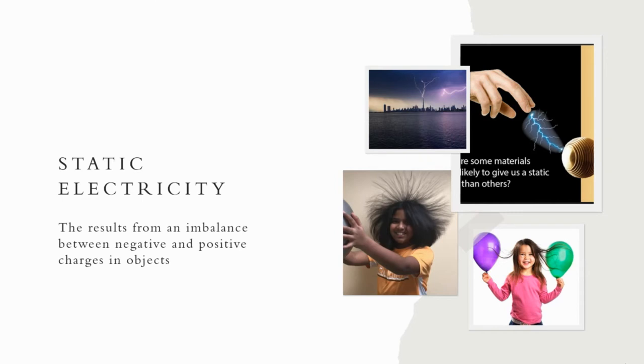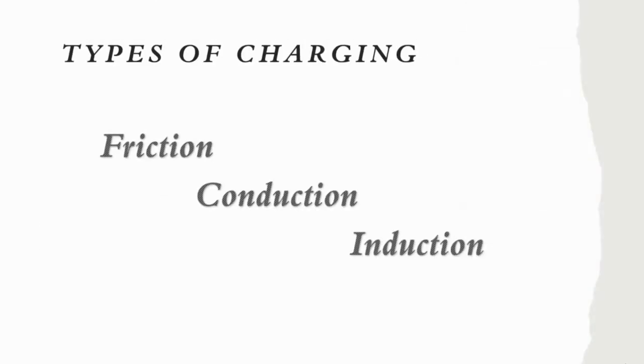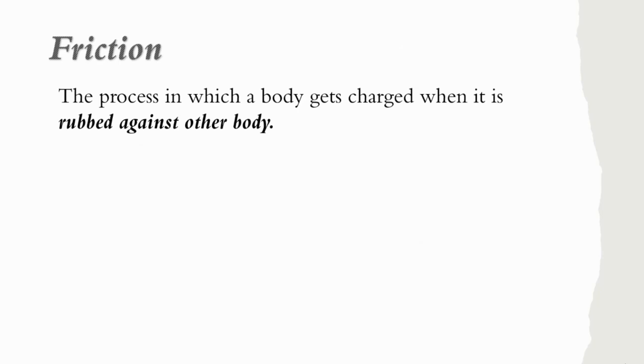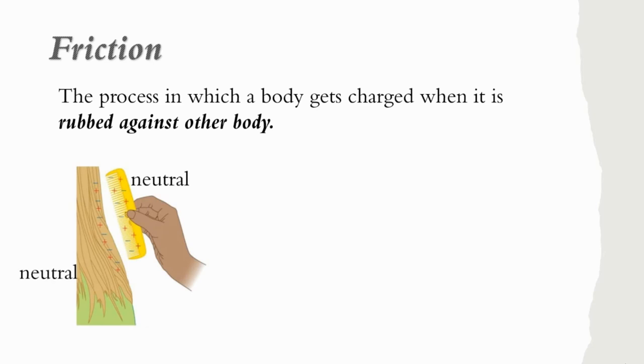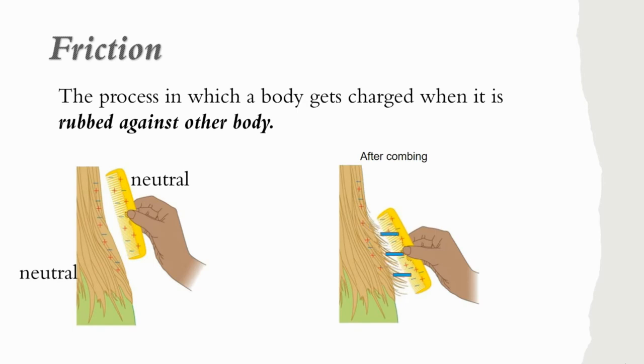There are three types of charging process. In the sample that I showed you earlier, when I rubbed the balloon against the sweater, that process of charging is known as friction. Friction is the process in which a body gets charged when it is rubbed against other body. For example, the comb and hair have initial neutral charges. But after combing your hair, which shows rubbing the hair, the comb gains electrons, so it becomes negative charge. And the hair lose electrons and becomes positively charged. The hair sticks or it attracts to the comb because they are oppositely charged.